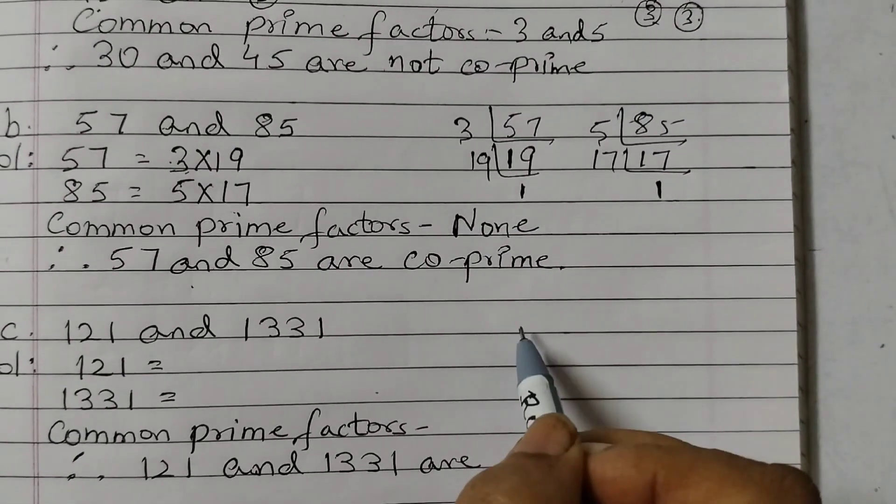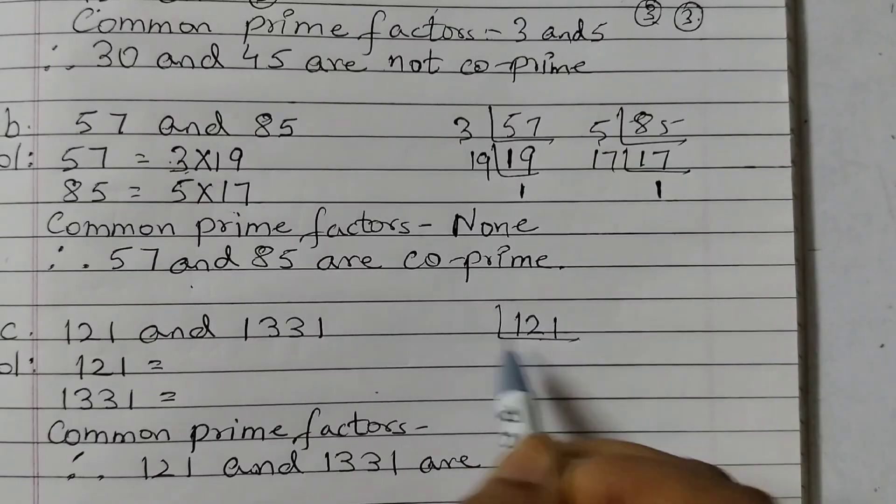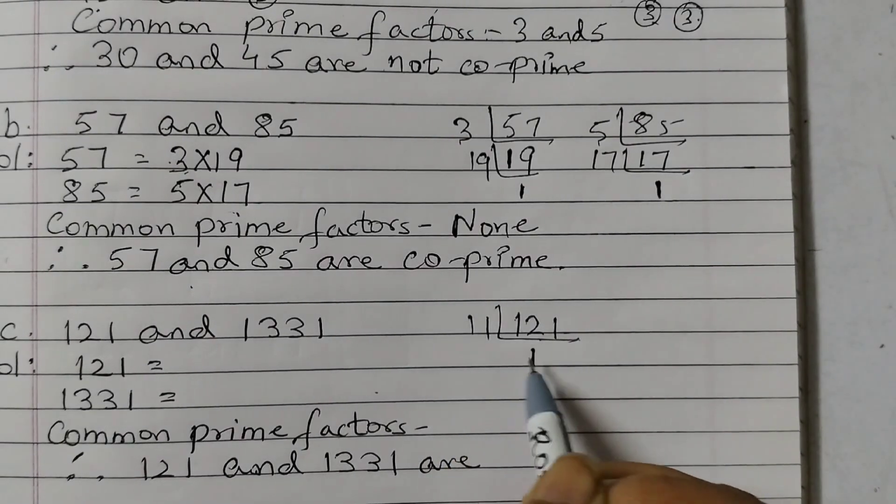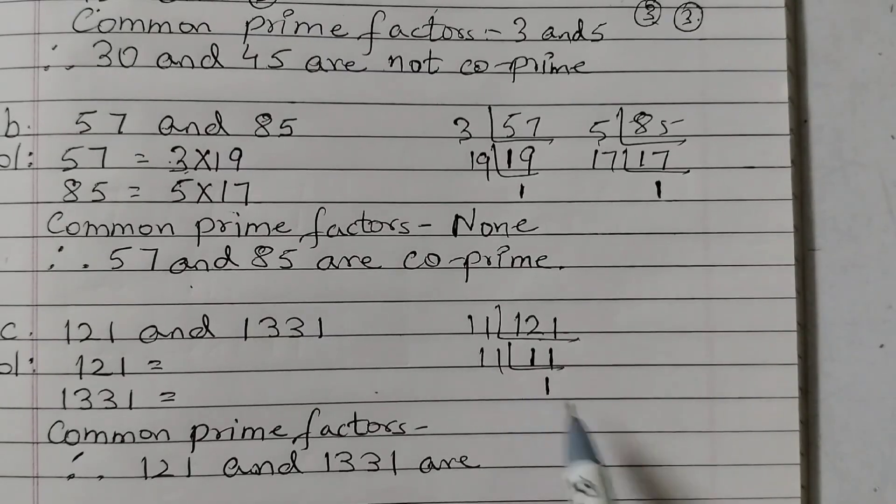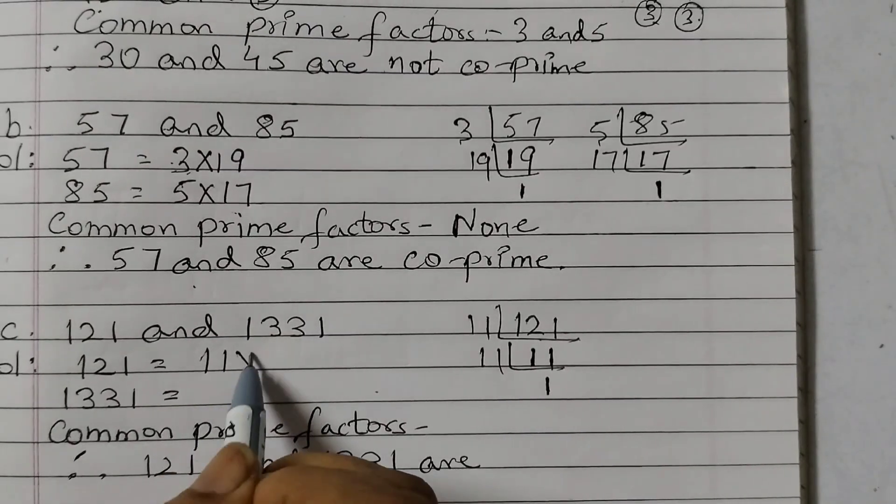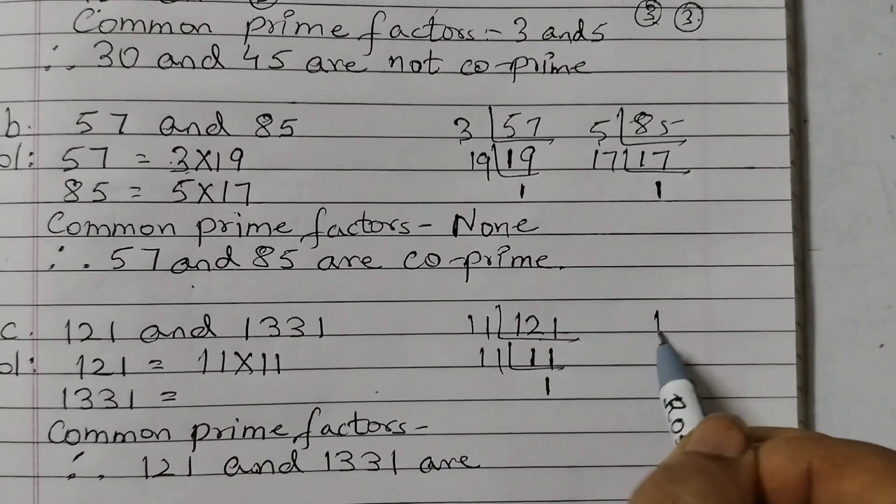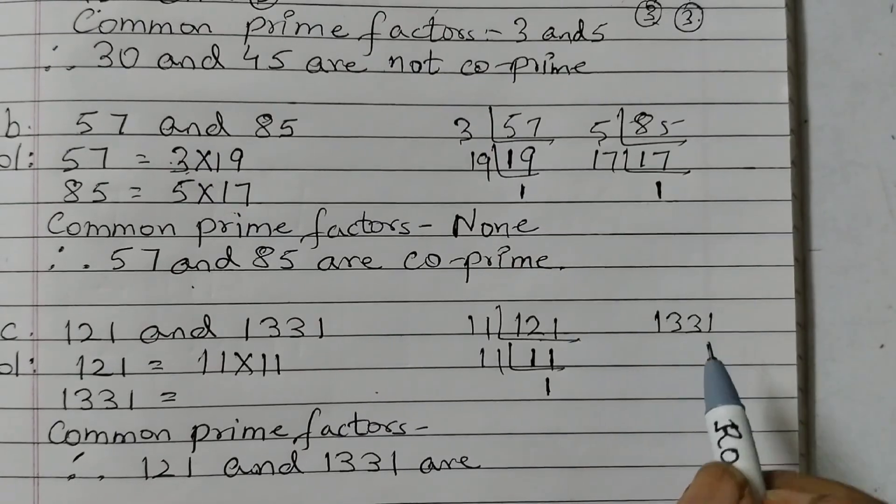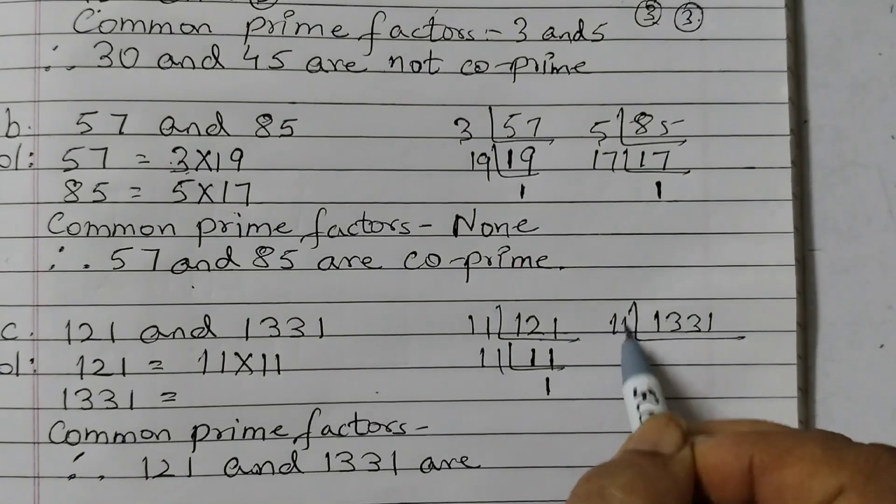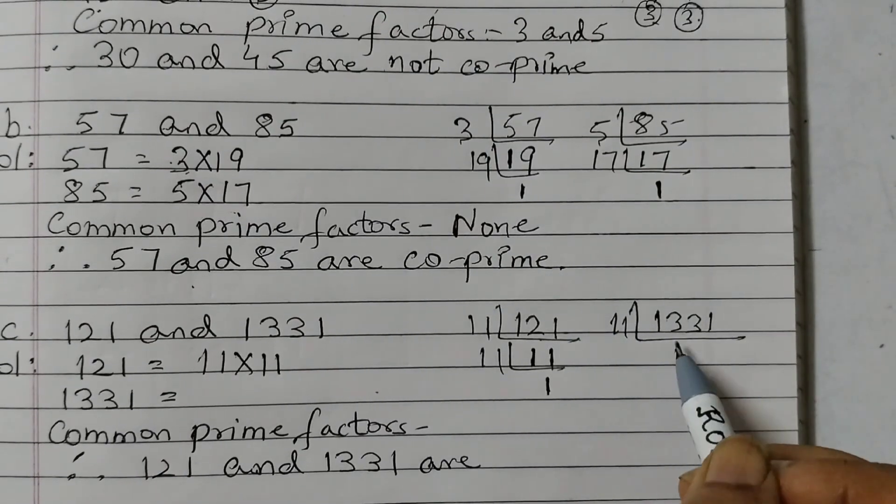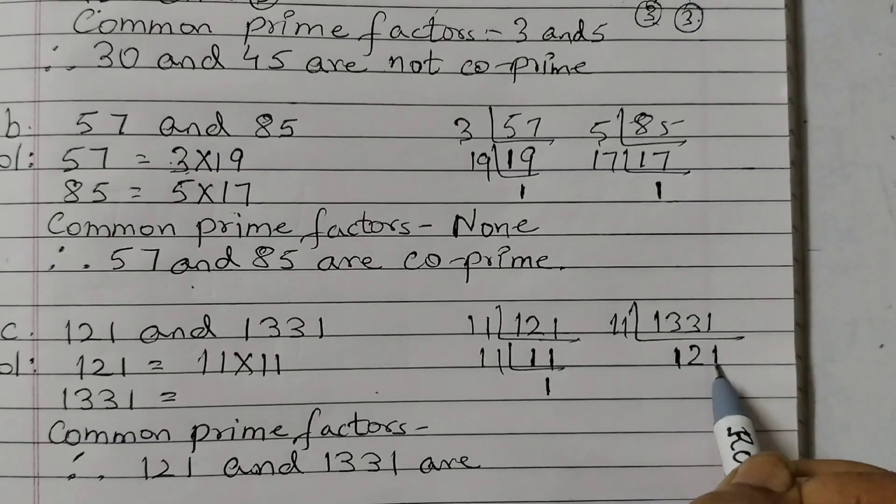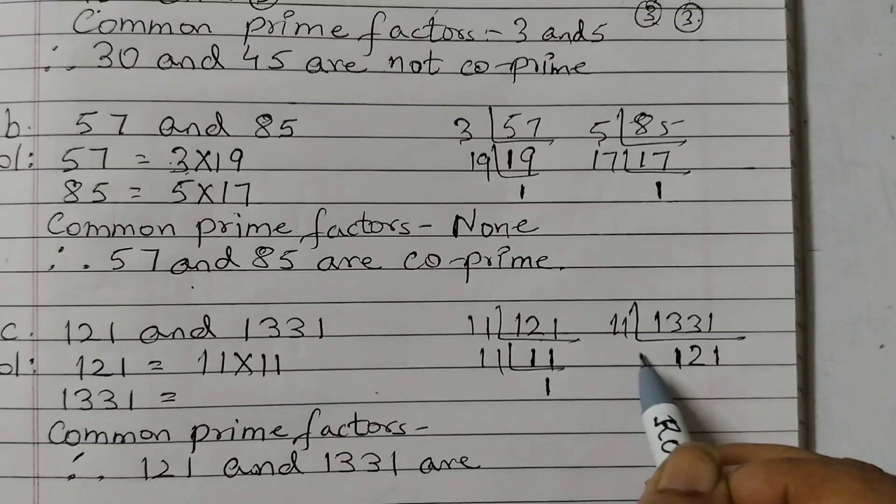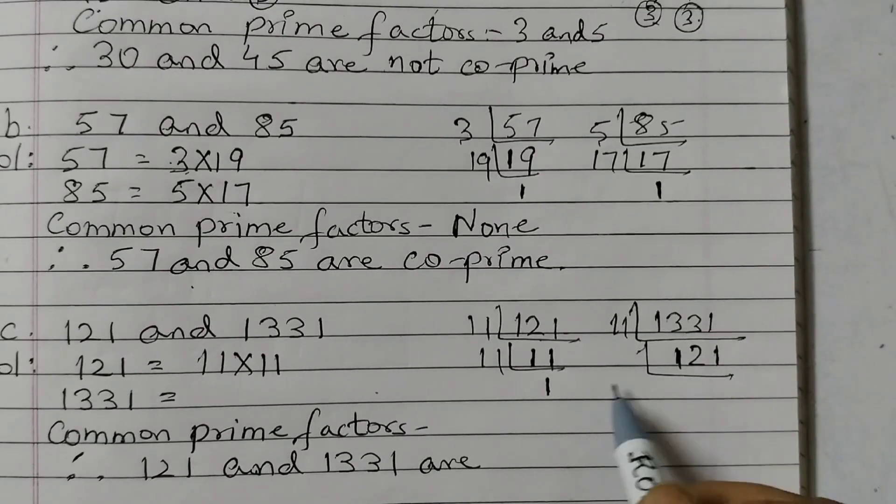So 121 we can divide by 11. 11 ones are 11 and then again 11. 11 ones are 11. So this can be written as 11 into 11. 1331 divide by 11. 11 ones are 11, 2, 23. So 11, 2's are 22, 11. This I am doing in my head. This division I am doing in my head.